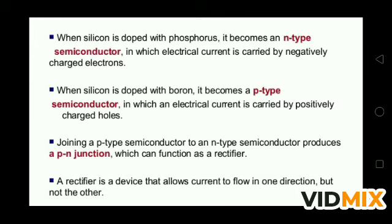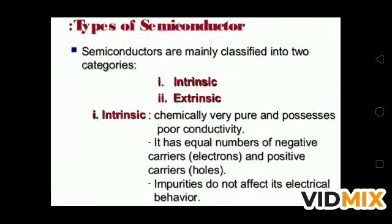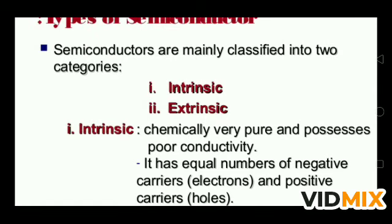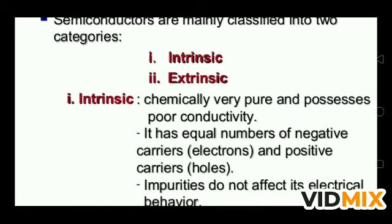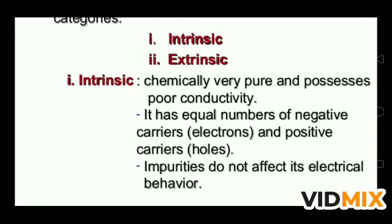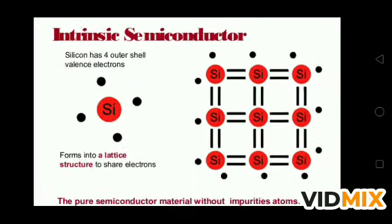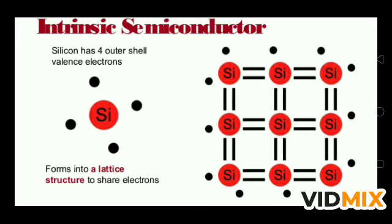Semiconductors are mainly of two types: intrinsic and extrinsic. An intrinsic semiconductor is chemically very pure and possesses poor conductivity. It has an equal number of negative carriers, that is electrons, and positive carriers, that is holes. Impurities do not affect its electrical behavior — intrinsic means it is a pure semiconductor. Silicon has four outer shell valence electrons, and in a crystal of silicon, the atoms share electrons with each other — this is the intrinsic semiconductor structure.